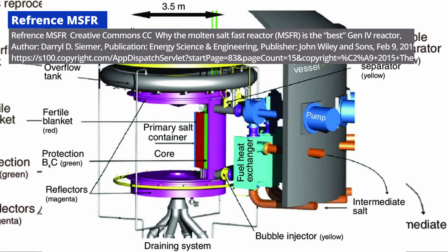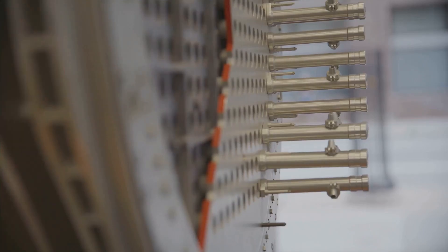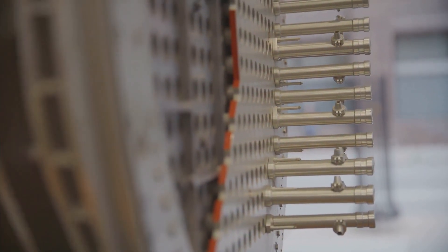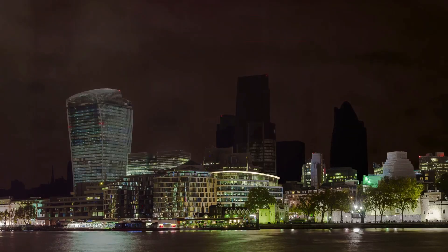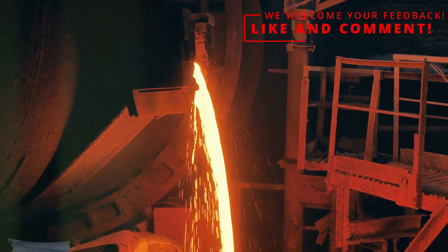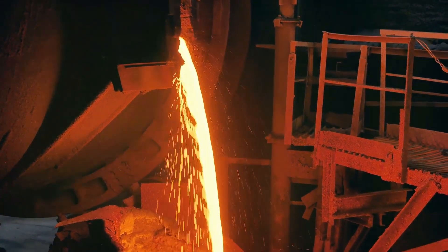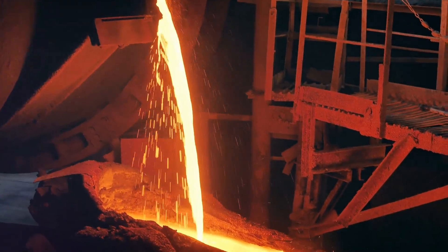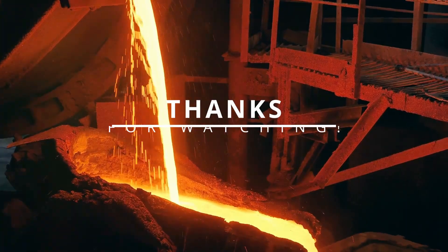But the main safety feature is the freeze plug—a small section of salt at the bottom of the reactor, kept solid by a cooling system. If the reactor overheats or loses power, the freeze plug melts, allowing the molten salt to drain into a safety tank where it cools and naturally solidifies, stopping the reaction, all without power or human intervention.